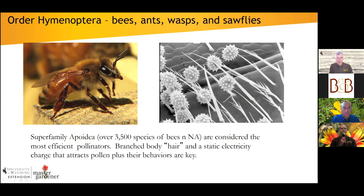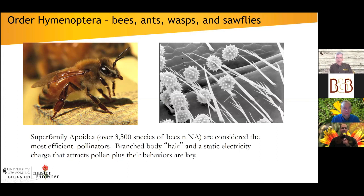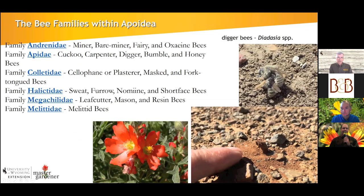The superstars of pollination are members of the superfamily Apoidea, which includes the honeybee — this is an Italian honeybee. Here's a scanning electron micrograph of the branched hairs on the body of bees that help grab pollen. Bees also carry a static charge that helps grab pollen so they can collect it, groom themselves, and pack it into their pollen basket. Both behavior and these specializations help them gather pollen.